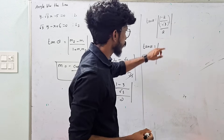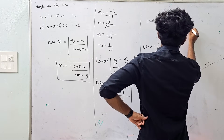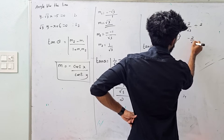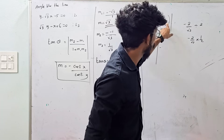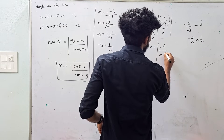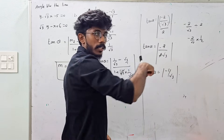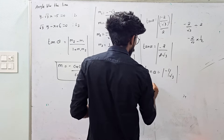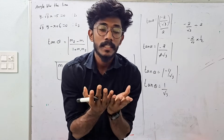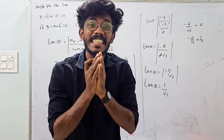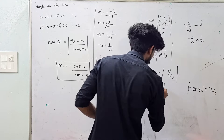So tan θ equals minus 2 by root 3 multiplied by 1 by 2 (reciprocal). That gives minus 2 by 2 root 3, which simplifies to minus 1 by root 3. Taking modulus, tan θ equals 1 by root 3. We know tan 30° equals 1 by root 3. Therefore, θ equals 30 degrees.